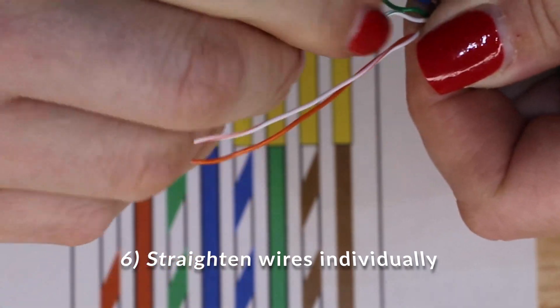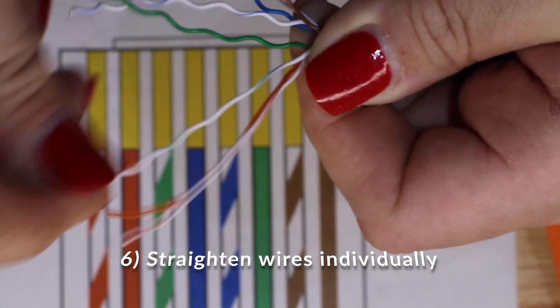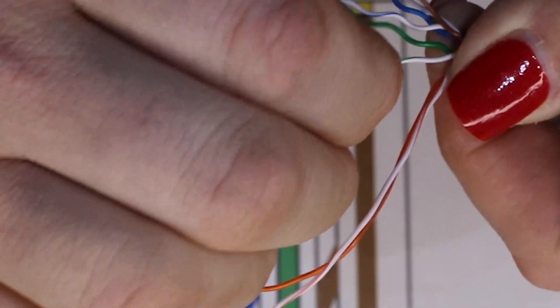Next up, we're just going to take a fingernail and manually straighten each and every single one of the eight wires that are included in this strand.